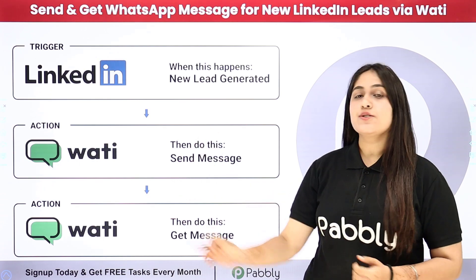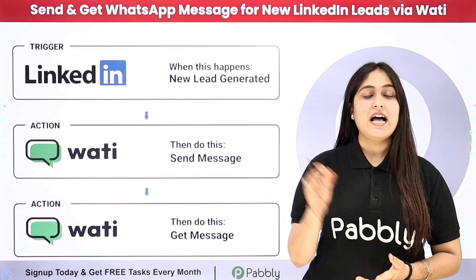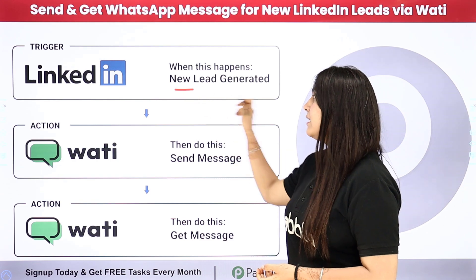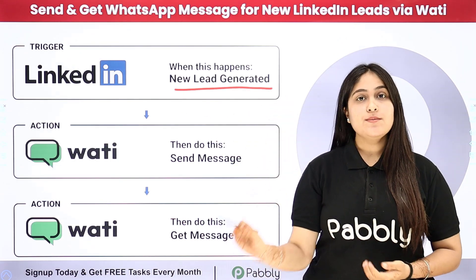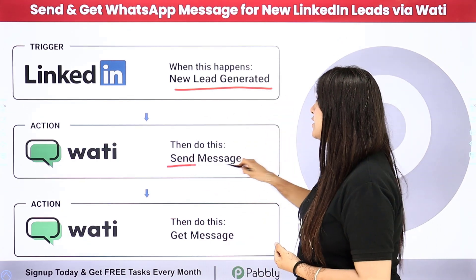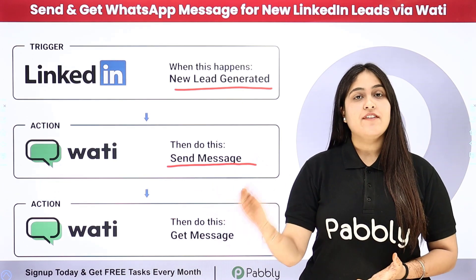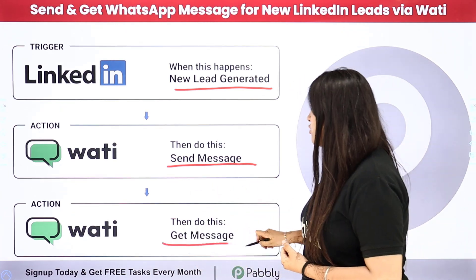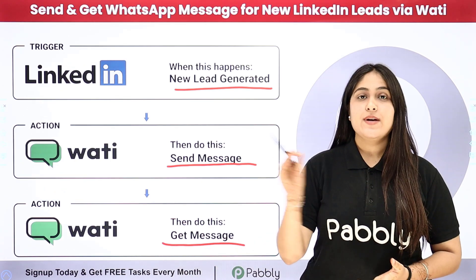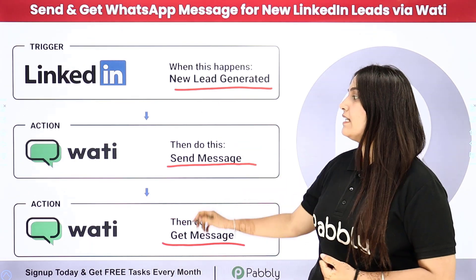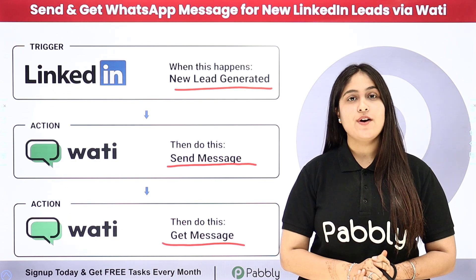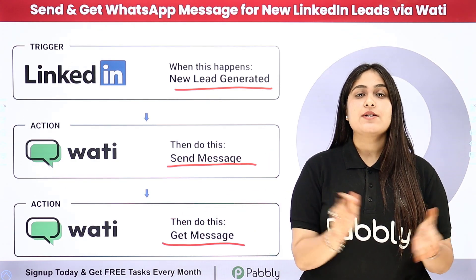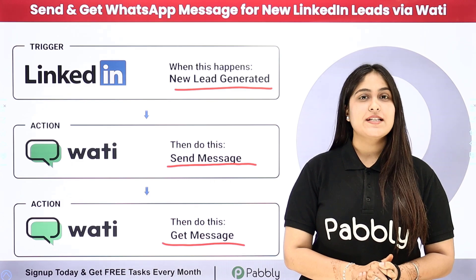I am using LinkedIn lead ads to generate new leads for my business. Whenever I receive a new lead in my LinkedIn lead ad, automatically a confirmation message should be sent to my lead using Vati, and after that automatically I should receive a new lead alert message on my WhatsApp using Vati. To build this connection, I need to connect these applications using an automation software named Pabbly Connect. To learn this process step by step, let me take you to my screen.